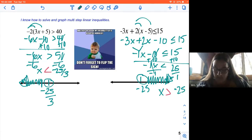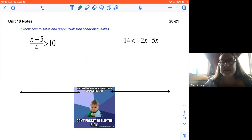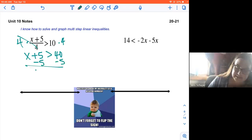All right. Let's try a couple more. Here we go. Looking on this first one on the left, we have the quantity x plus 5 divided by 4. So I'm going to multiply both sides by 4. So x + 5 > 40. I'm going to subtract 5 from both sides. So x is more than 35.